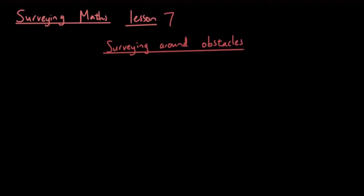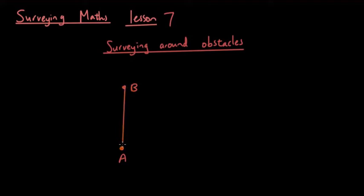Hey guys, it's Eddie the Magic Monk. In the last few surveying lessons we have done so far, we have assumed that the surveyor can simply measure distances from point A to point B without any obstacles. For example, if there was a point A and another point B, we assumed the surveyor could simply draw a straight line from A to B and measure it using tape, a trundle wheel, or something like that. But today we're going to talk about what happens if there's an obstacle they have to get around.